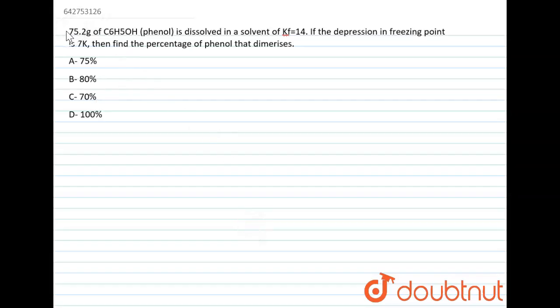Let us solve this question. This says that 75.2 grams of phenol is dissolved in a solvent of Kf 14. If the depression in freezing point is 7 Kelvin, find the percentage of phenol that dimerizes.